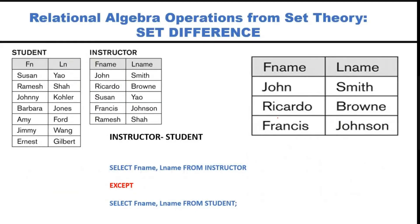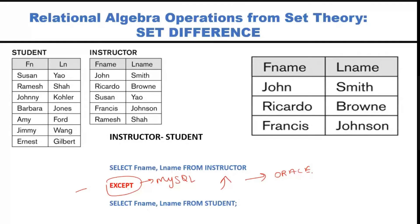Now translating 'instructor minus student' into SQL: SELECT first_name, last_name FROM instructor EXCEPT SELECT first_name, last_name FROM student. You can also write SELECT * FROM instructor. The minus/set-difference operation in SQL is called EXCEPT. Note that this may not work in MySQL but should work in Oracle.